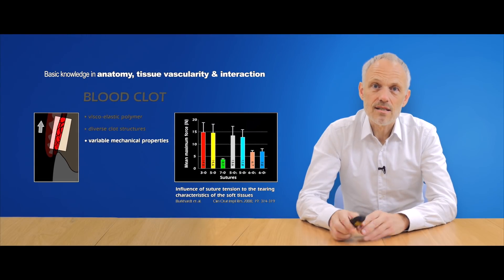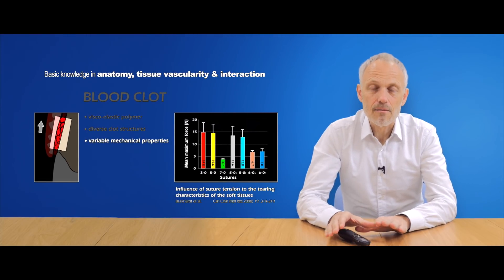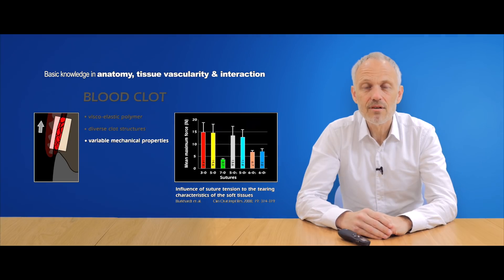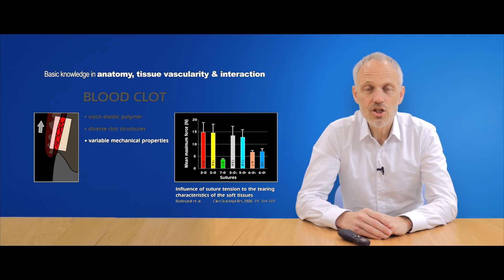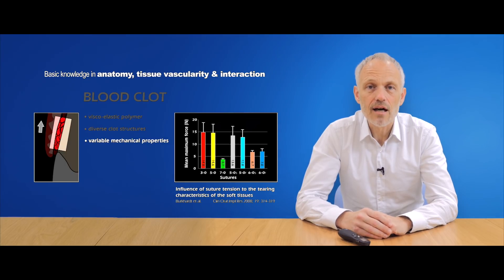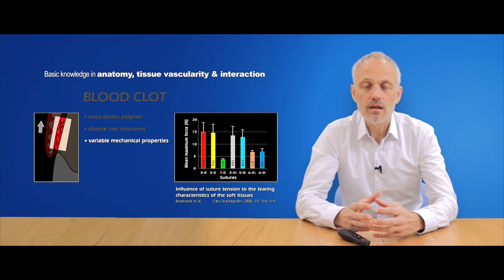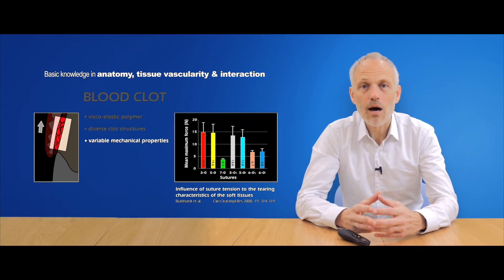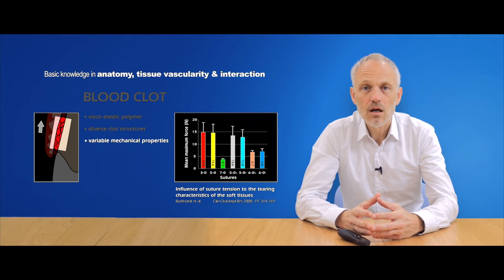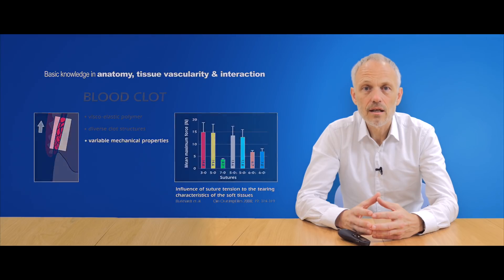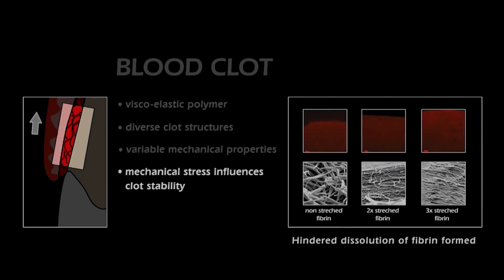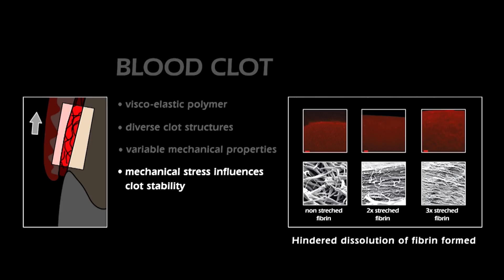Several studies have investigated the clinical behavior of the clot. For example, a clot under tension resorbs more slowly than one that is not under tension. The clot must be an open structure to allow access to fibroblasts, while also being firm enough to resist the forces applied.